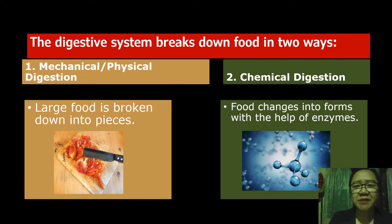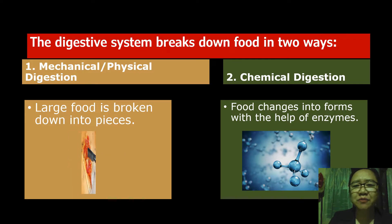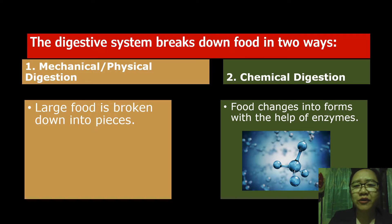The digestive system breaks down food in two ways. One is mechanical or physical digestion, where food is broken down into pieces, just like when you cut a tomato into pieces. Number two is chemical digestion. During this process, food changes into different forms with the help of enzymes.